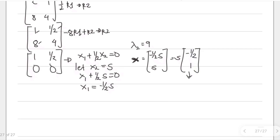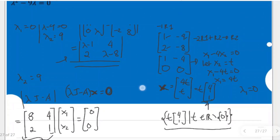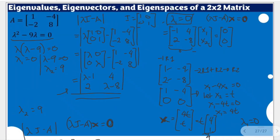The eigenspace for eigenvalue 9 is the set of all s times (negative one half, 1), where s is a real number but not equal to 0. This completes the process we started in the previous video with the characteristic equation — finding the eigenvalue, eigenvector, and eigenspace. Please review the process of getting the characteristic equation so that you will be guided.